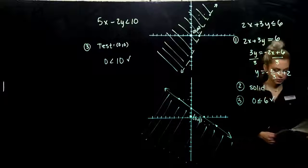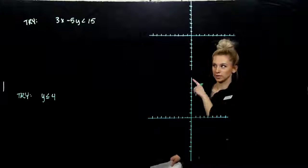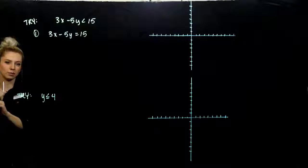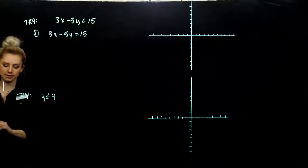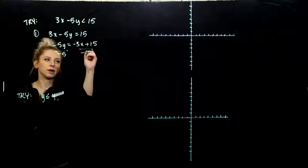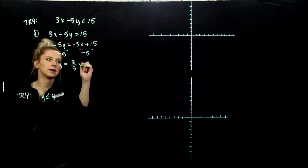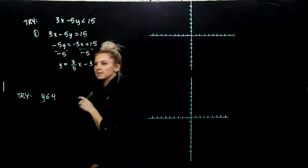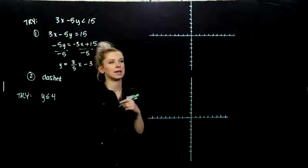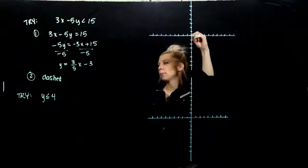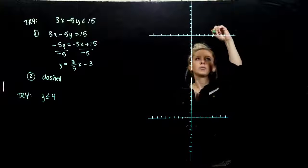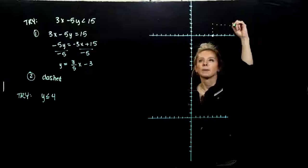Here are two for you to try — graph those two inequalities. For the first example, exchange the inequality for equality and solve for y to get it in slope-intercept form so we can graph the boundary line easily. Subtracting 3x from both sides and dividing by negative 5 gives y equals 3/5 x minus 3. Is the line solid or dashed? It's dashed because we can't include the boundary line — we don't have the equality case. So draw a dashed boundary line through (0, −3), moving up 3, over 5 from there.